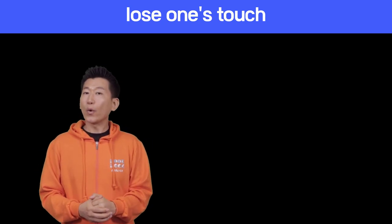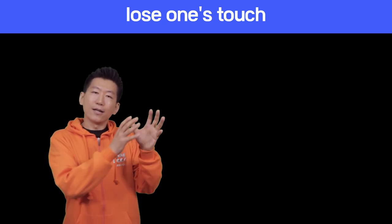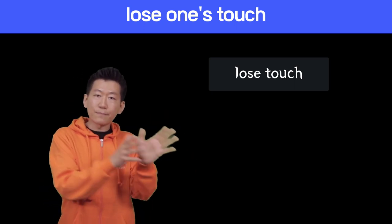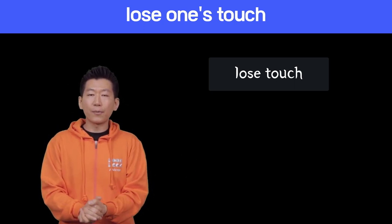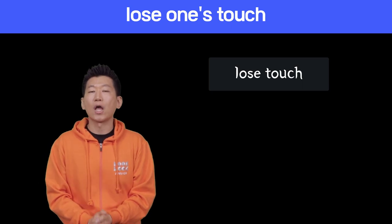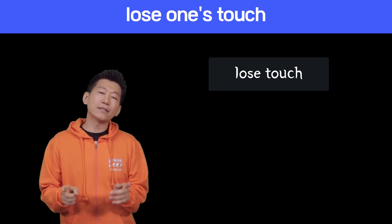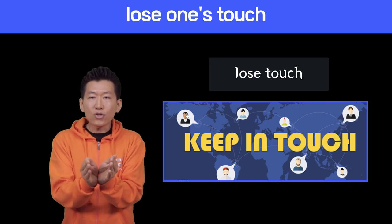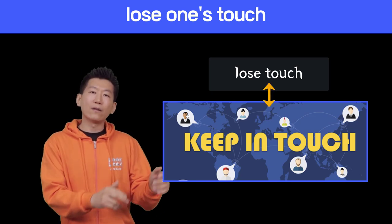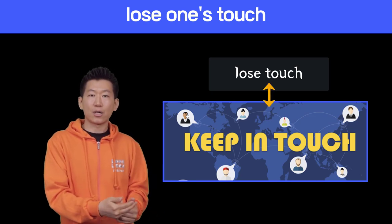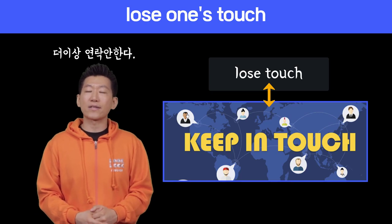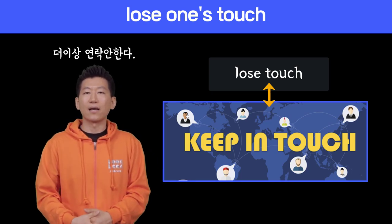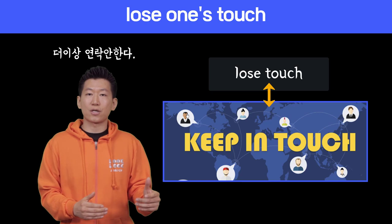헷갈리는 표현이 바로 'lose touch'예요. 아까 전에는 'lose my touch,' 'lose your touch'였죠. 이번에는 소유격이 들어가지 않죠? 그럴 때는 바로 'keep in touch,' 'stay in touch'의 그 터치와 반대되는 표현으로써 'I lost touch' — 그 친구하고 더 이상 커뮤니케이션 안 한다, 연락을 주고받지 않는다라는 표현이 되겠습니다. 'Lose touch,' 아시겠죠?